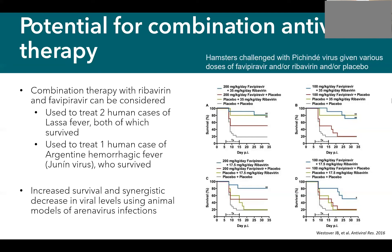In animal models, combining ribavirin and favipiravir shows both increased survival and a synergistic antiviral effect compared to either alone. In a hamster model using Pirital virus as a surrogate for South American hemorrhagic fevers, hamsters treated with the combination at various doses (shown in survival curves A, B, C, and D) demonstrated the best survival outcomes compared to either drug alone or placebo.